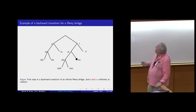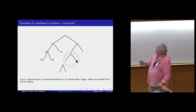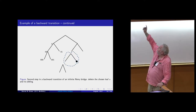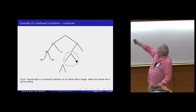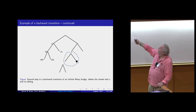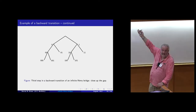Here's how that works in a picture. We've chosen a leaf — the black dot — delete it and its sibling. That leaves a gap between the bulk of the tree and this pendant subtree, and we close up the gap by sliding this vertex to join with that vertex, as in the picture.